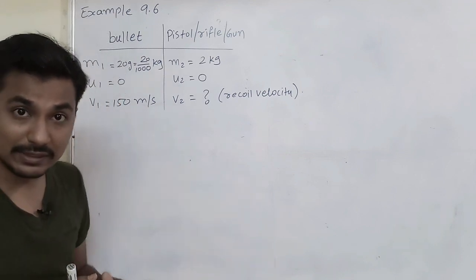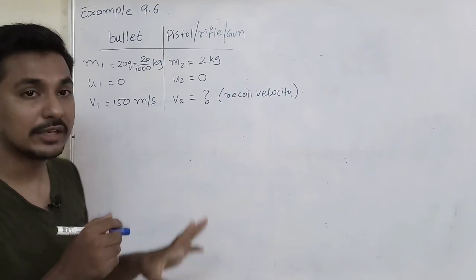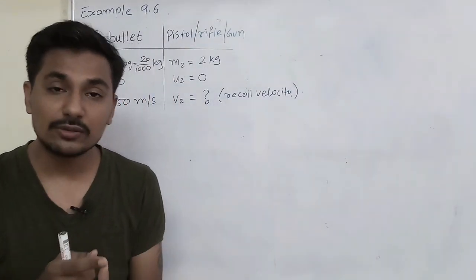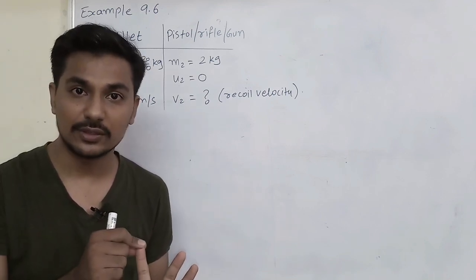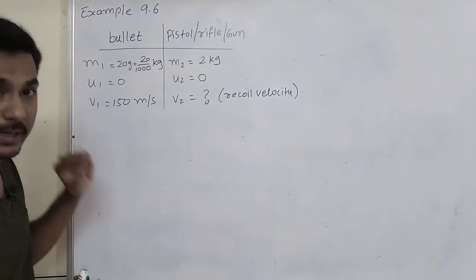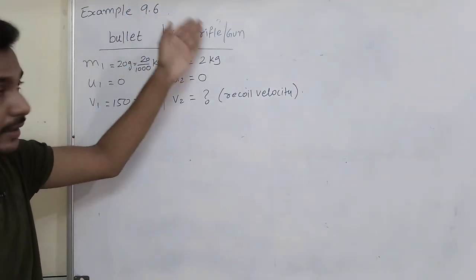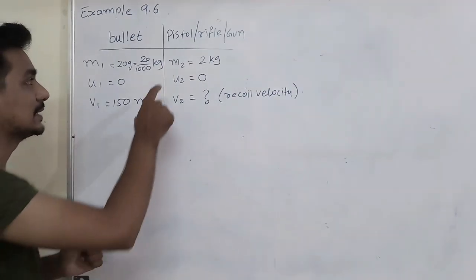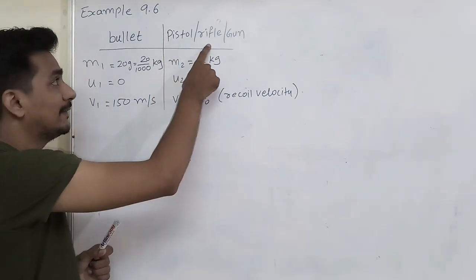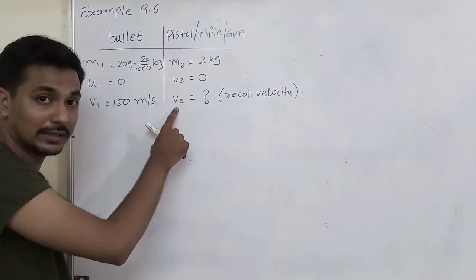So it depends upon the demand of the question. In this question, it is given that initially both are at rest, and when you fire the bullet it acquires a velocity of 150 meters per second — what is the recoil velocity of the rifle or pistol. So very simply, you consider the first object as the bullet and the second as the pistol or rifle or gun. I have considered the bullet as object one: its mass is M1, its initial velocity is U1, and its final velocity is V1. The pistol is the second object: its mass is M2, its initial velocity is U2, and its final velocity is V2.